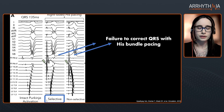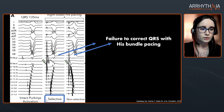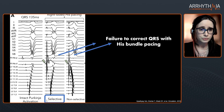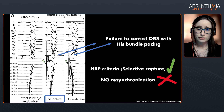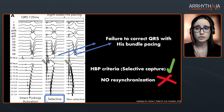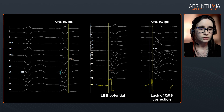I have two examples — one with His bundle pacing and one with left bundle branch pacing — where we can capture the conduction system but are not truly resynchronized. In a patient with interventricular conduction disease and intact Purkinje activation, we pace the His bundle selectively, but we are not correcting the QRS. The same applies with non-selective capture: we have the His bundle pacing criteria with selective capture, but we are not resynchronizing.